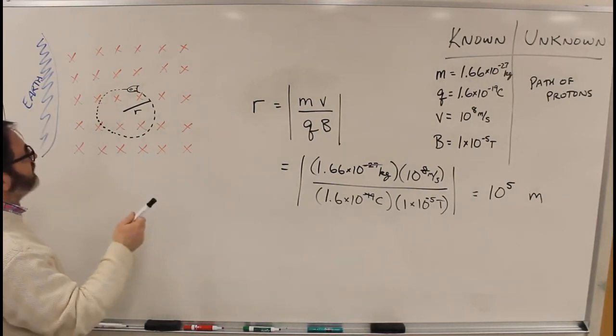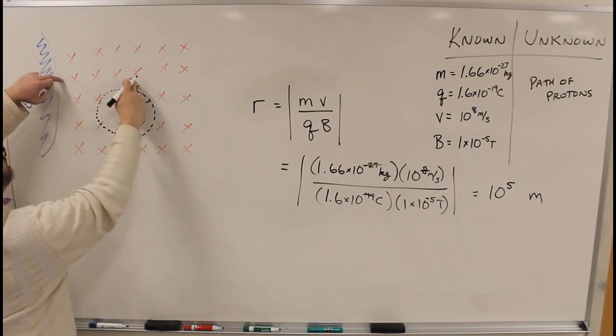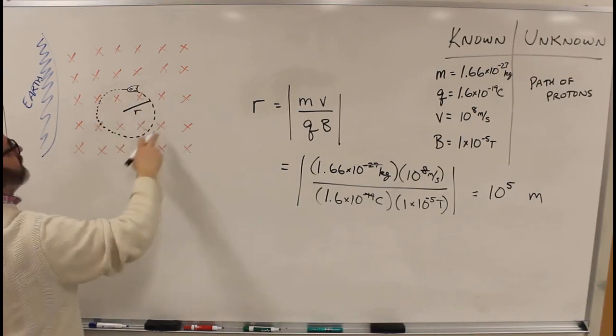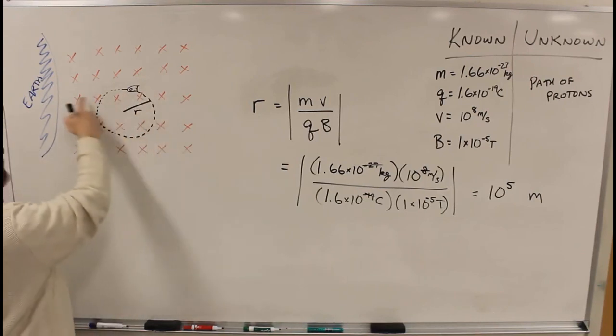Given in the problem was also that the launching distance—they were out 500 kilometers from the Earth. So this 100 kilometer loop won't hit the Earth.